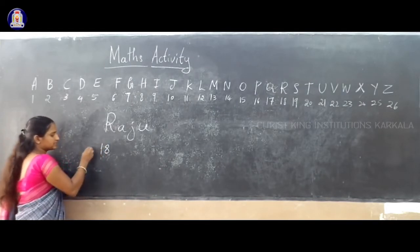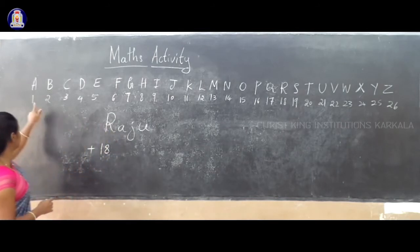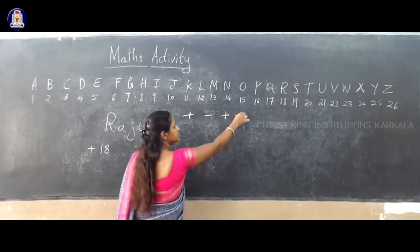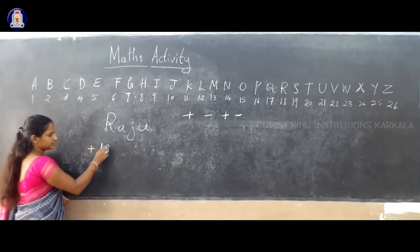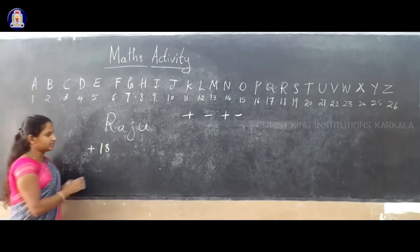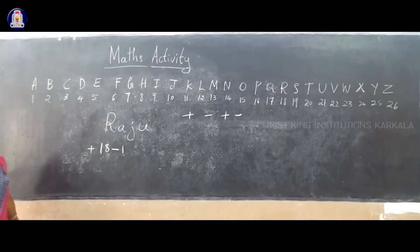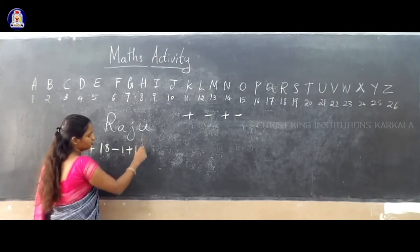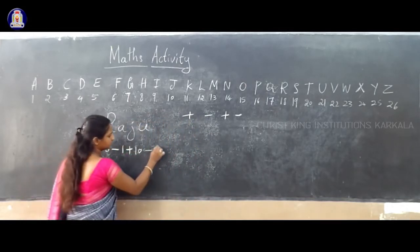So R, I consider plus 18. Next, A means 1. What is the rule? Plus, minus, plus, minus. So A, I consider minus 1. And J is 10, that is plus. Then U is minus 21.